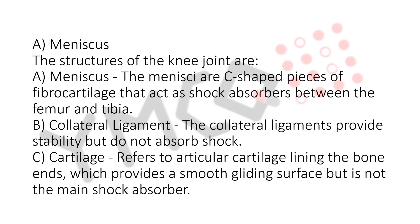B. Collateral ligament: the collateral ligaments provide stability but do not absorb shock. C. Cartilage: refers to articular cartilage lining the bone ends, which provides a smooth gliding surface but is not the main shock absorber.